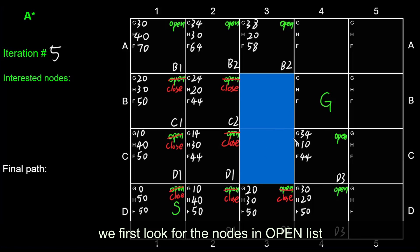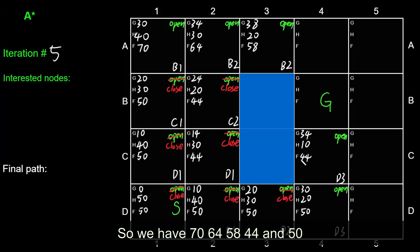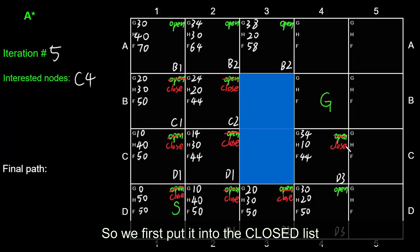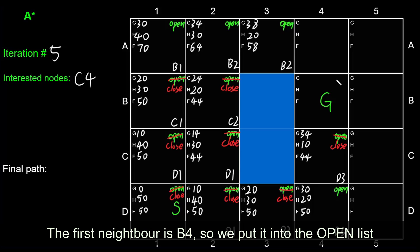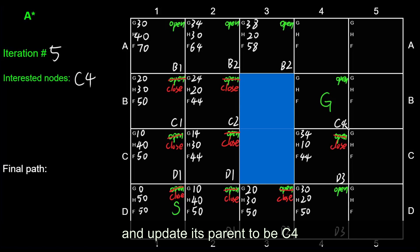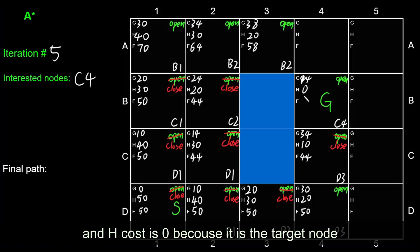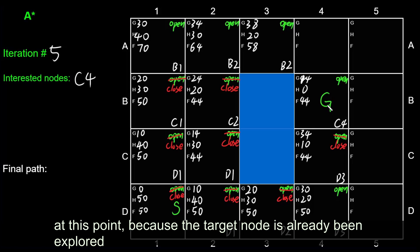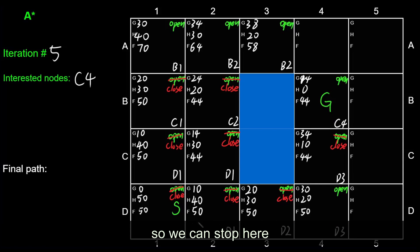In iteration five, we look for the minimum f cost node. The smallest is 44 at node C4. We put C4 into the closed list and explore its neighbors. The first neighbor is B4. We put B4 into the open list with parent C4. G cost is 34 plus 10 = 44, h cost is 0 since this is the target node, so f cost is 44. At this point, the target node has been reached and we can stop.